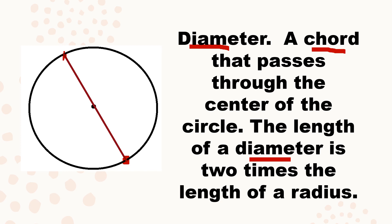For example, if the diameter from one point to another is 20 centimeters, then the measure of each radius is 10 and 10. So if you divide the diameter, you'll get the length of the radius. And if you double the radius, you'll get the measure of your diameter.